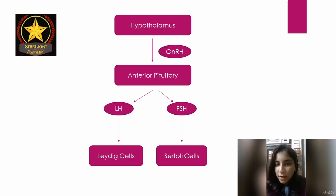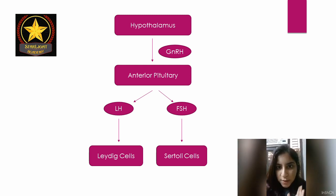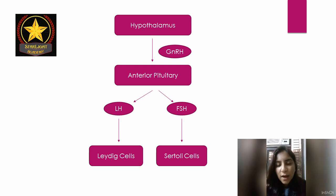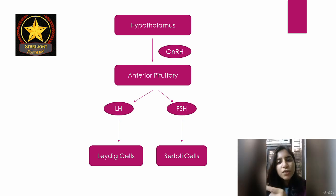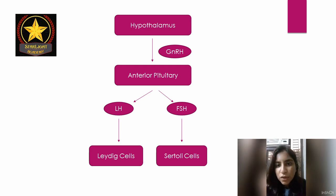To summarize the hormonal regulation: from puberty, the hypothalamus secretes GnRH, which goes and binds to the anterior pituitary. The anterior pituitary then secretes gonadotrophins — LH and FSH. LH goes and binds to Leydig cells to synthesize and secrete androgens, for example testosterone. FSH goes and binds to Sertoli cells, which help in spermiogenesis — the differentiation of sperms — and also provide nourishment to the developing sperms.